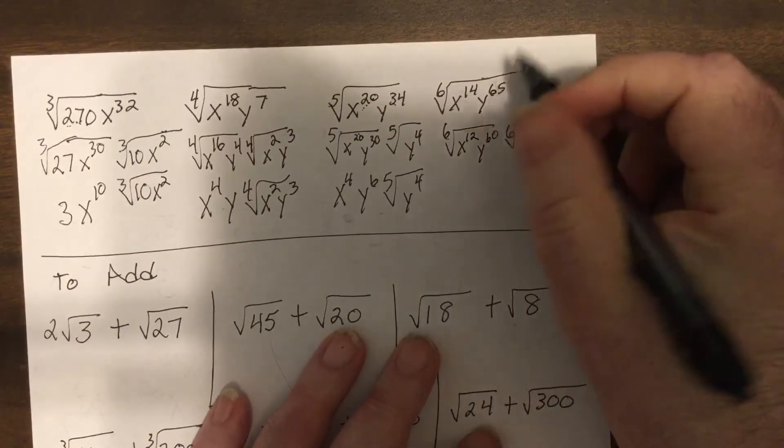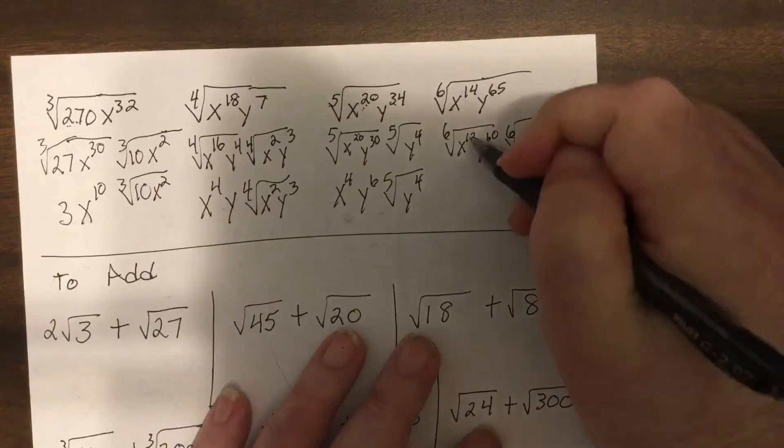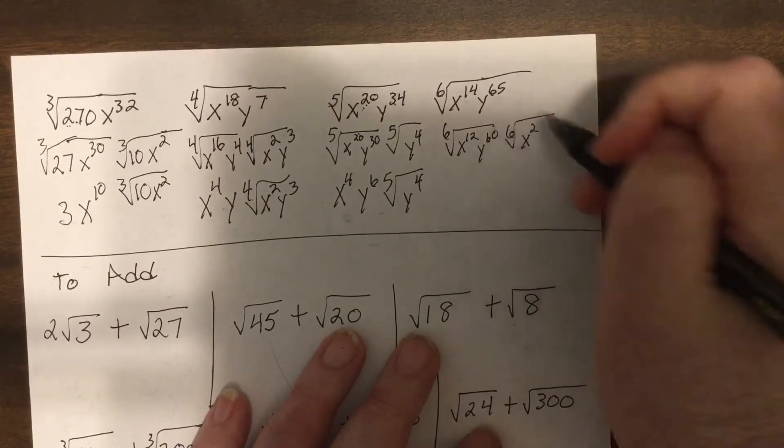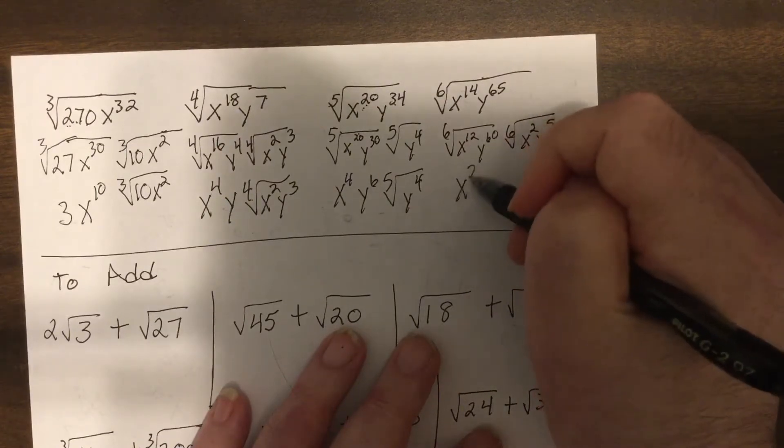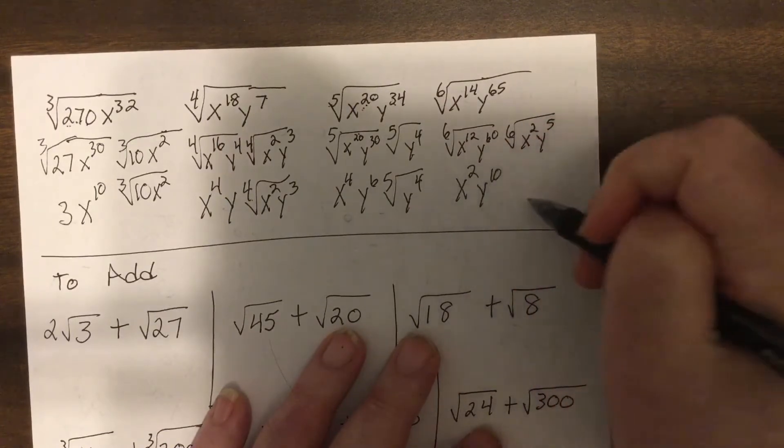Okay, so it'd be y to the 12th, excuse me, x to the 12th would be x squared, y to the fifth. So this would be x squared, y to the 10th, the sixth root of x squared, y to the fifth.